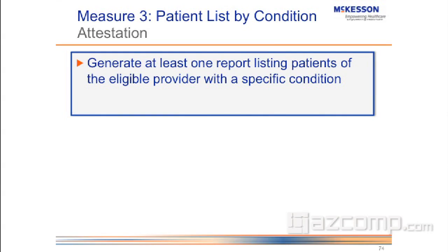Basically what the item on this one is, is that you have to generate at least one report listing for patients that are eligible for the eligible provider with a specific condition. The example you're going to hear all day from me is diabetes — that's the one that you can create a list on. And that's just an attestation basically saying, can you create that list — at least one list? If you can't, then you can't meet it.